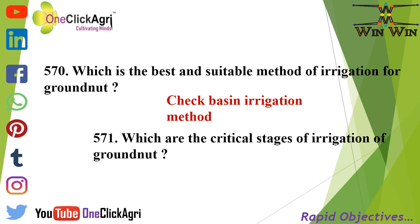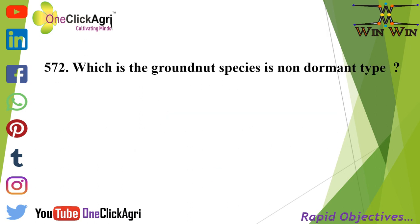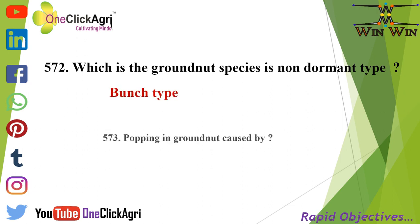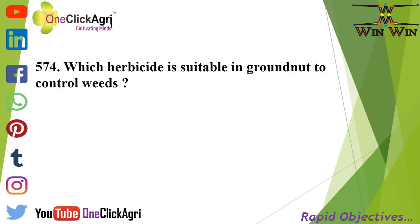What are the critical stages of irrigation of groundnut? Flowering stage, pegging stage, and pod formation stage. Which groundnut species is non-dormant type? Bunch type. Popping in groundnut is caused by calcium deficiency.